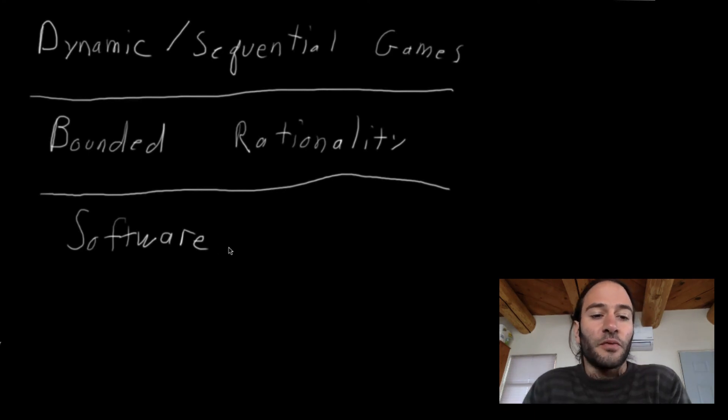What I would like to do is provide an example with software known as Gambit. The Gambit software can model and solve both normal form and sequential games. Basically, we're just going to go through an example. I'm going to show you how the software works, and then hopefully you can play with it on your own. The software is free, so feel free to download it on your own personal computer.